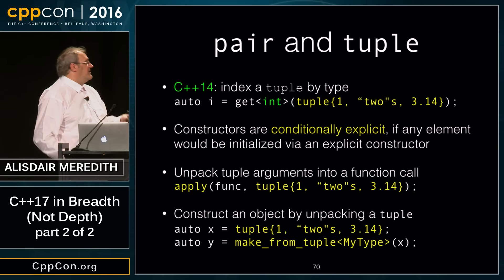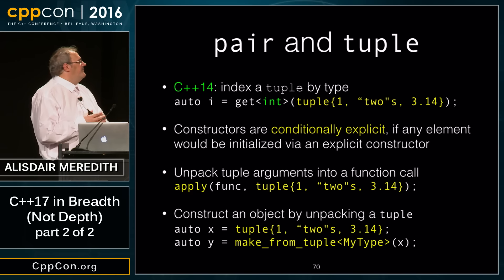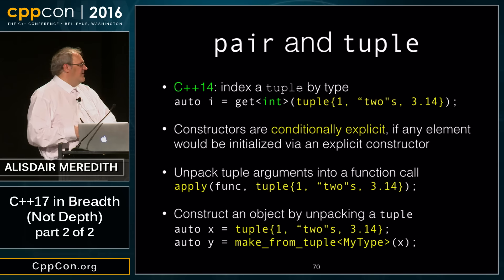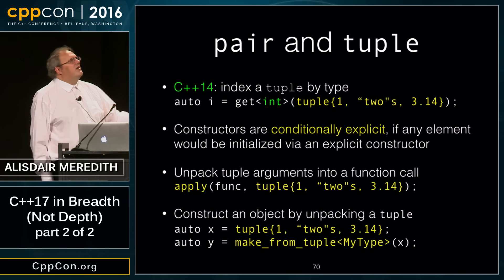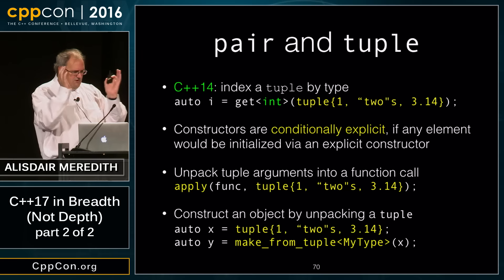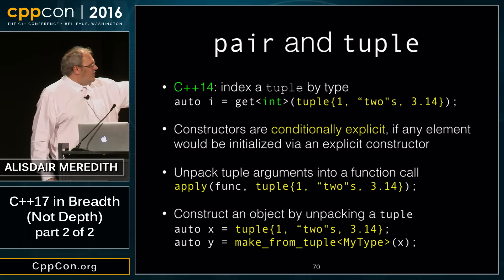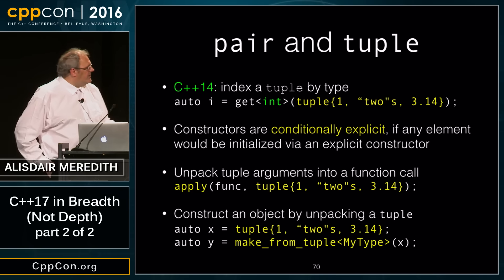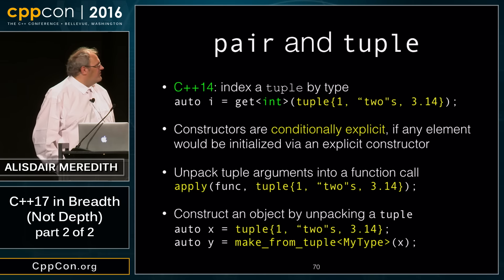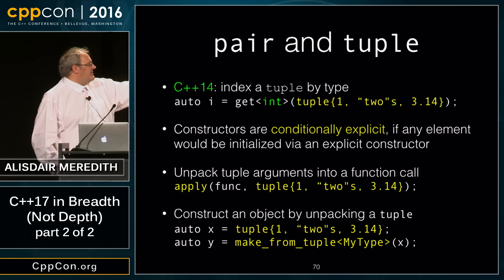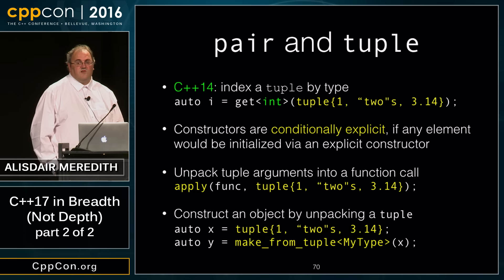Similarly, std::make_from_tuple constructs an object by unpacking a tuple — it's the apply equivalent for constructors. Like make_pair, make_shared, or make_unique, you specify the type to construct, and it unpacks the tuple to the appropriate constructor. So `auto t = tuple{1, 2, 3}; MyType obj = make_from_tuple<MyType>(t);`.